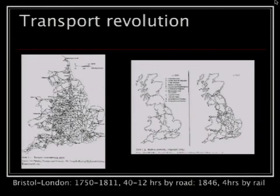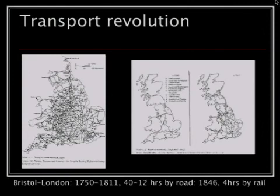And then steam shipping from the 1840s. All of these forms of transport enabled goods, people, and news to be conveyed faster and over greater distances than they ever had before. They helped literally forge together, providing an infrastructure that connected first the nation-state and then the empire at large.